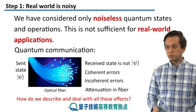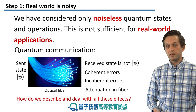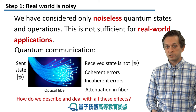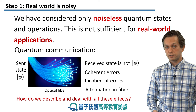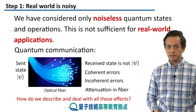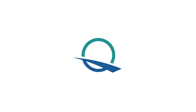So, how do we describe all of these scenarios? How do we create a new formalism for describing such quantum states? And particularly, how do we deal with these effects? Let's find out.